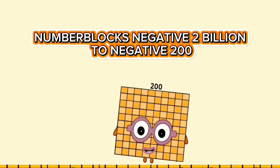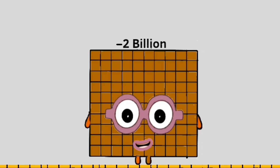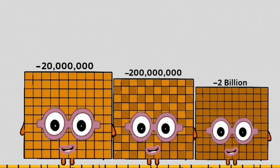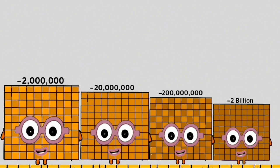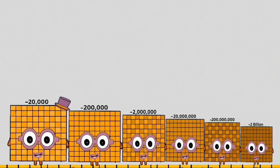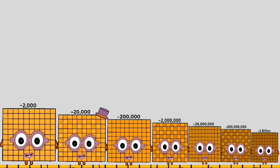Number blocks: negative two billion to negative two hundred. Negative two billion, negative two hundred million, negative twenty million, negative two million, negative two hundred thousand, negative twenty thousand, negative two thousand, negative two hundred.